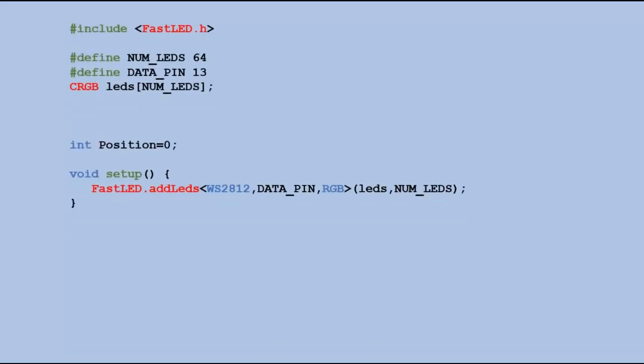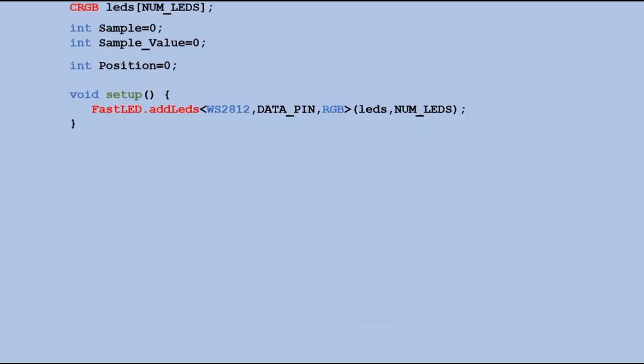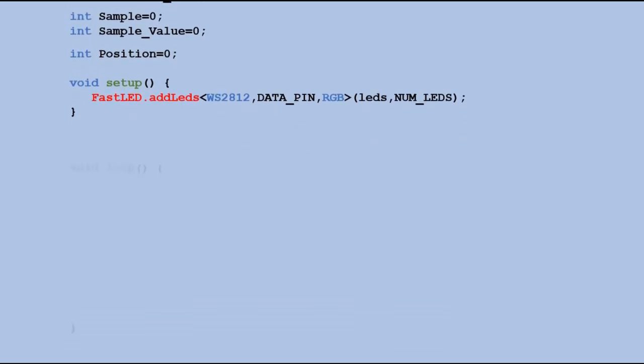For this I would need to introduce two new variables. The concept is to execute loop function several times, 10 times in this example, without interacting with LED matrix. Instead we are reading value from potentiometer pin 10 times and sum those readings up. We use sample variable to keep track on how many times loop function was executed.